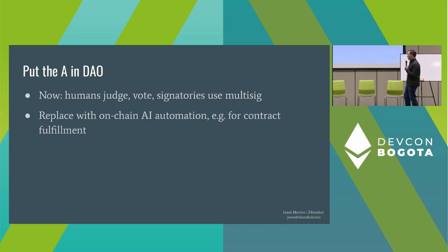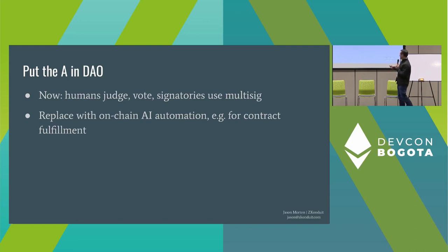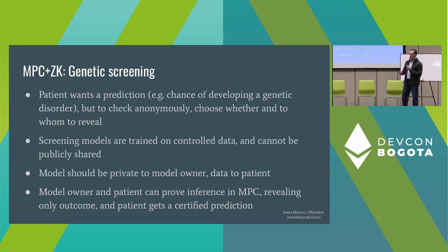It's exciting to think about this as putting the 'A' in DAO — taking situations where humans currently make a judgment about what happened, vote, and multi-signatories execute that judgment, and instead putting all of that with an effectively on-chain AI. You could use it to test whether someone who promised to do work for a DAO actually did a good job. You can also think about genetic screening situations where the model has to be kept secret because it was trained on non-consented data, and patient data has to be secret — just like when someone wants an STD test and would like to maintain anonymity. That's another application.